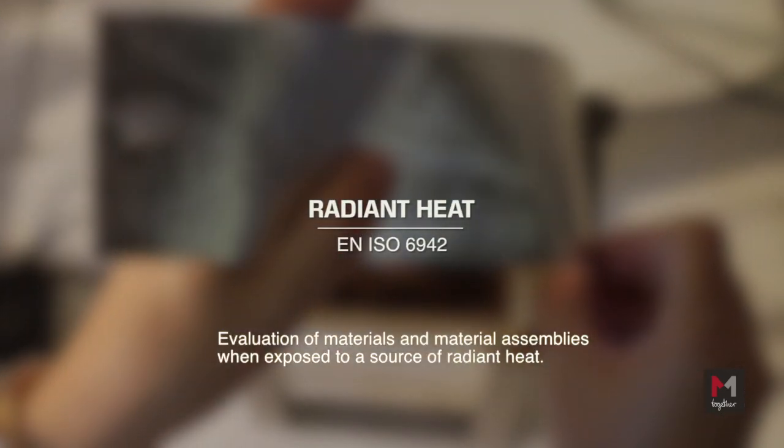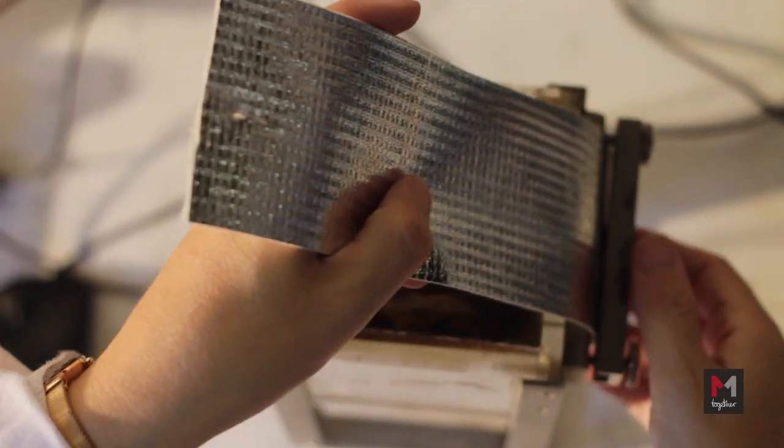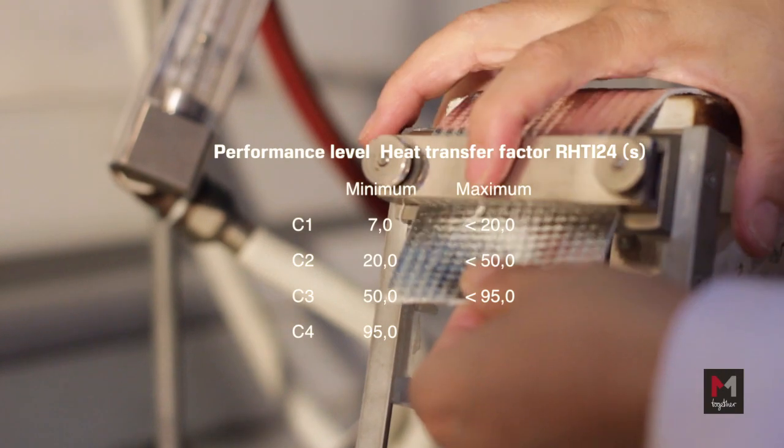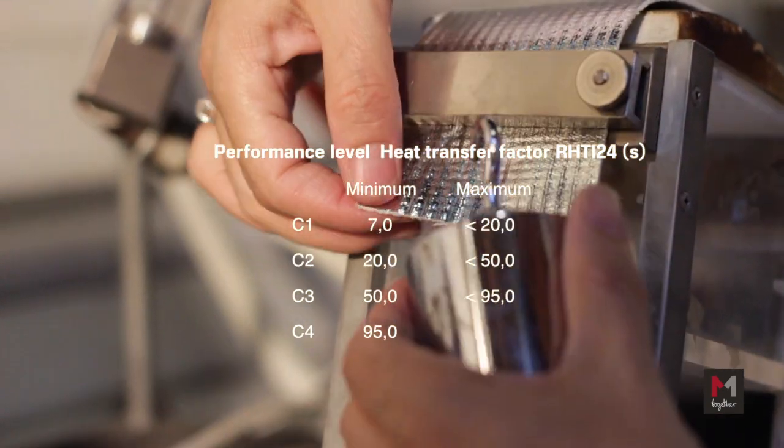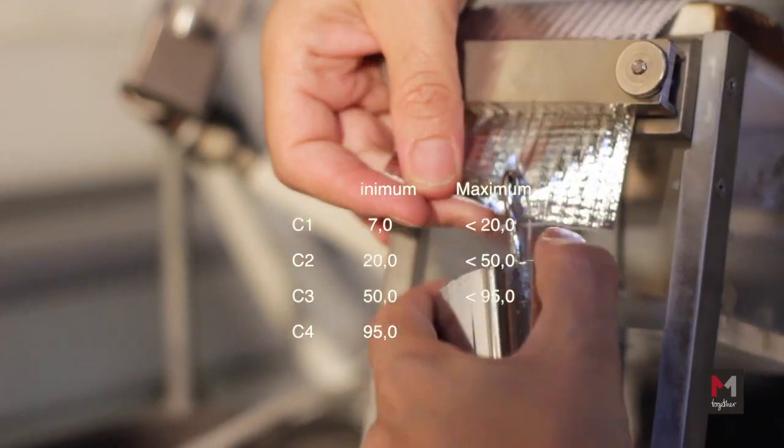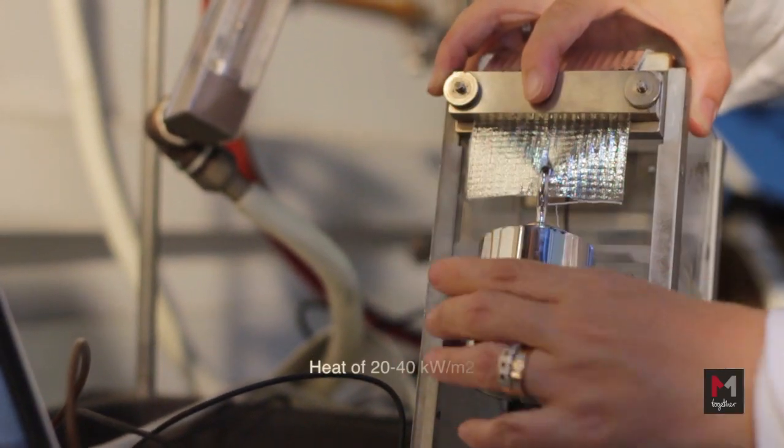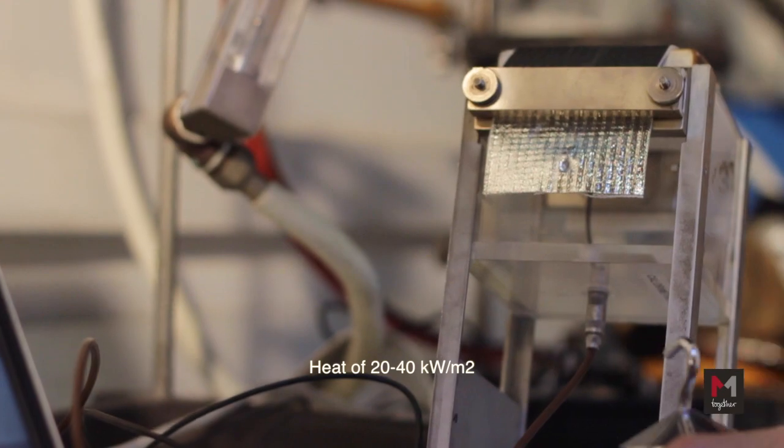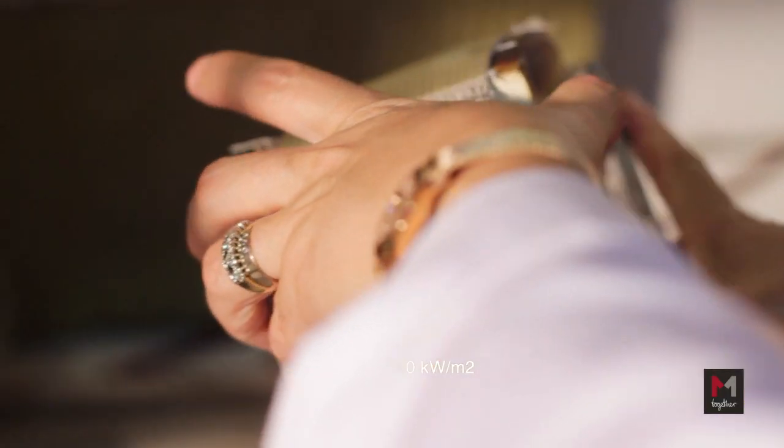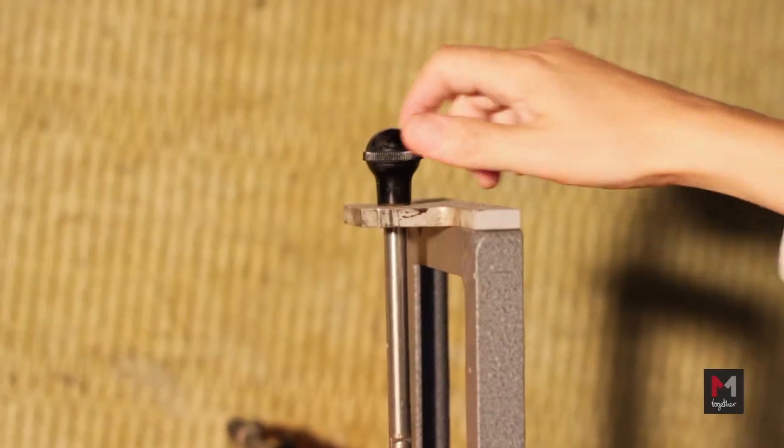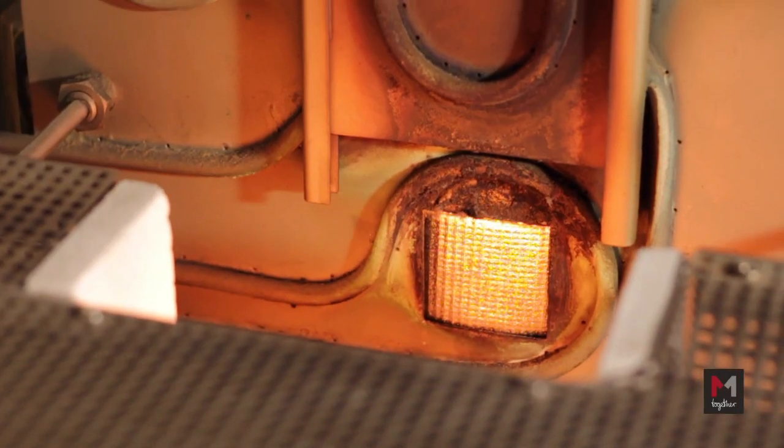Radiant Heat: For each material or set of materials at least three specimens shall be tested, 230 millimeters by 70 millimeters. Test Method: The specimen is subjected to an incident heat flux of radiant heat of 20 to 40 kilowatts per square meter.